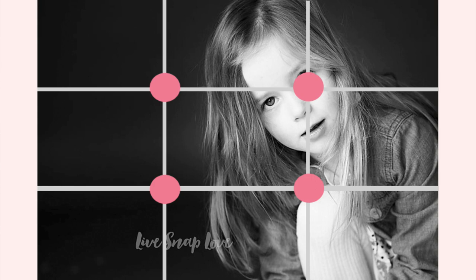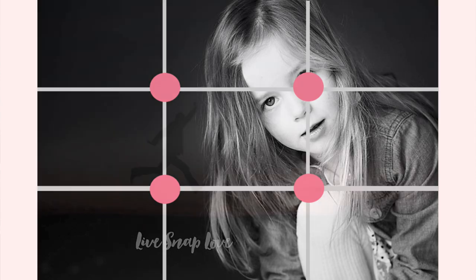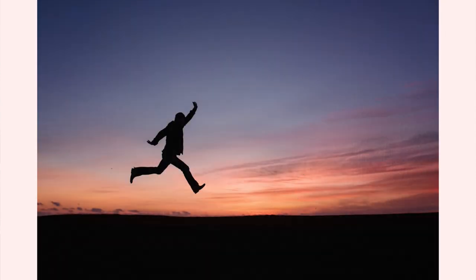Our eyes are actually naturally drawn to the points where these lines intersect, so place a point of interest where those two lines intersect. In this example, you can see this is over her eye. You don't have to have something exactly where the lines intersect — you can simply have your subject falling along one of those lines, whether that be the vertical line or the horizontal line.